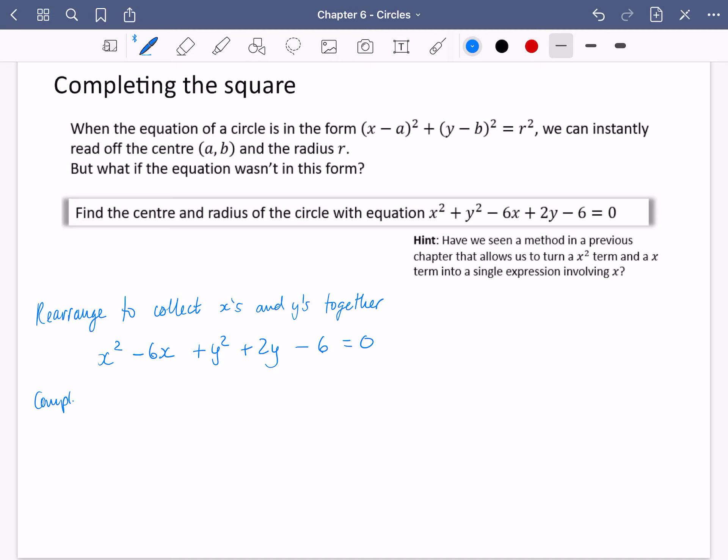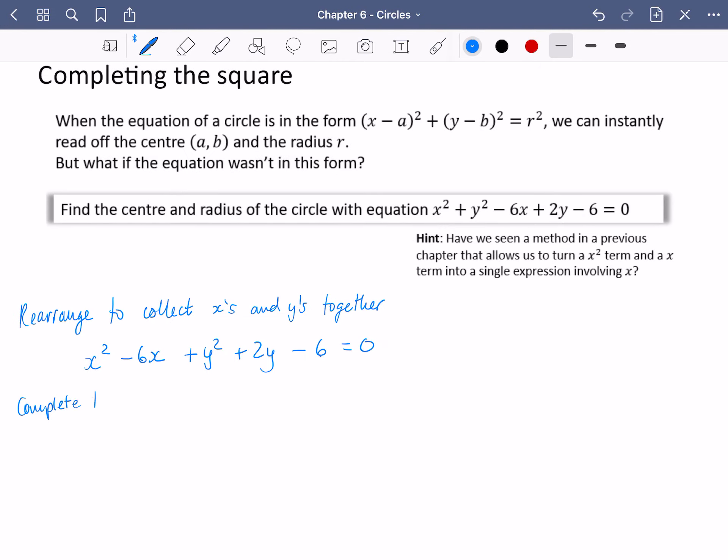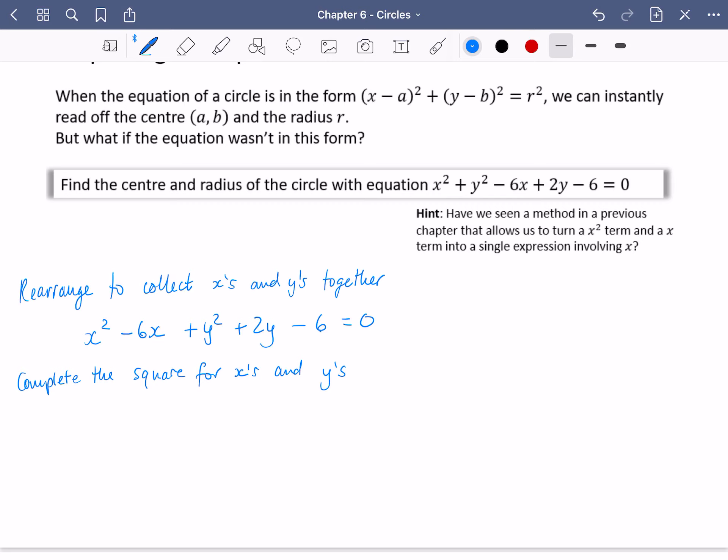And then the next thing that I will do is I will complete the square for the x's and the y's. Now, if you can't remember how to complete the square, you need to make sure that you can look over this. I'm not going to be reteaching it here. So completing the square on this first section is just going to be (x - 3)². You half the x coefficient and square it. And then because this would produce an extra 9 here, you need to remove the extra 9 that has just been generated.